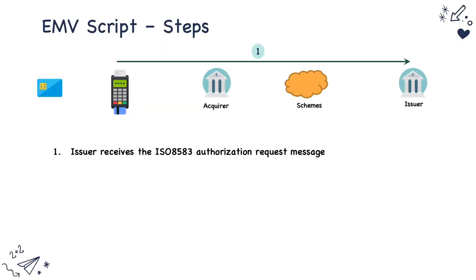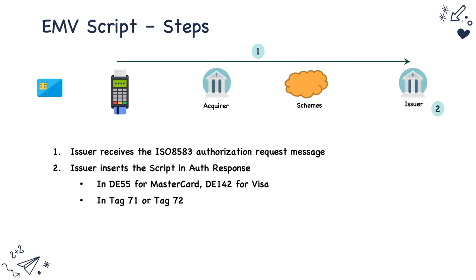Whenever we use a card at a terminal, the terminal initiates an ISO 8583 request message to the issuer. The issuer then inserts the script to be executed on that card. In the case of Mastercard, the issuer script is inserted in data element 55, and in the case of Visa the issuer script is updated in data element 142. Within these data elements, in tag 71 or tag 72, the issuer script is included.